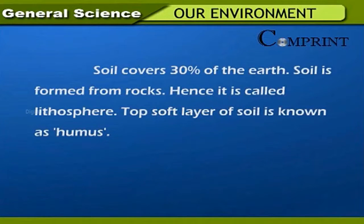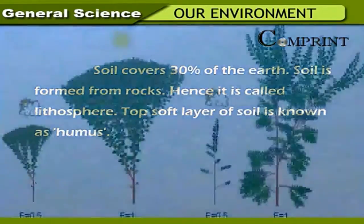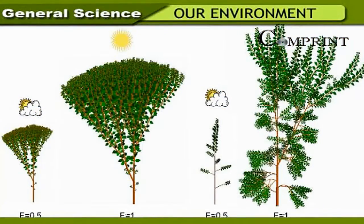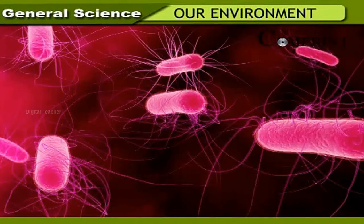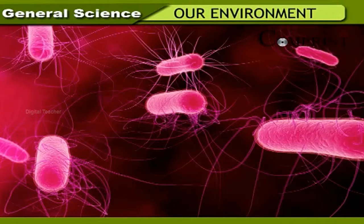Soil: Soil covers thirty percent of the earth. It is formed from rocks, hence it is called lithosphere. The top soft layer of soil is known as humus. Soil is necessary for the growth of plants — it supplies nutrients and salts to plants and fixes the plant firmly. Bacteria which live in soil decompose dead animals and plants and make the soil fertile, making soil essential for livelihood of living organisms.